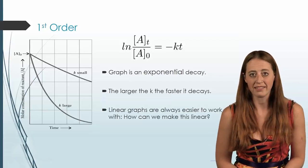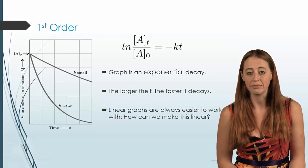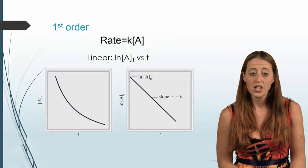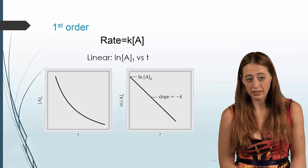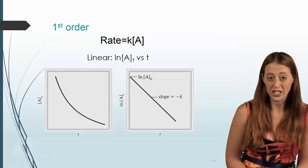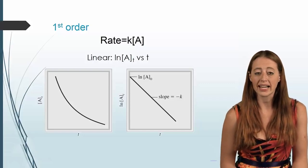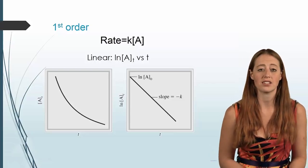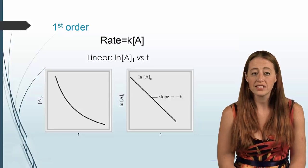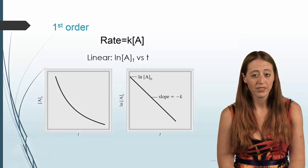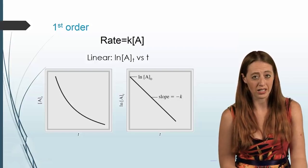Linear graphs are easier for us to work with, and so for kinetics we like to be able to change these into linear graphs. There's no way to magically make this a linear system, but what we can do is change how our axes work. Instead of just graphing concentration of A on our y-axis, we can change the y-axis into the natural log of the concentration of A. This gives us a straight line with a slope of negative k, and our y-intercept is going to be the natural log of our initial concentration of A.